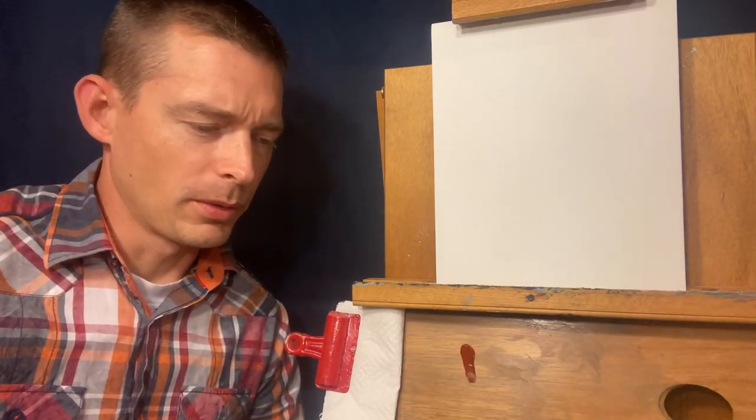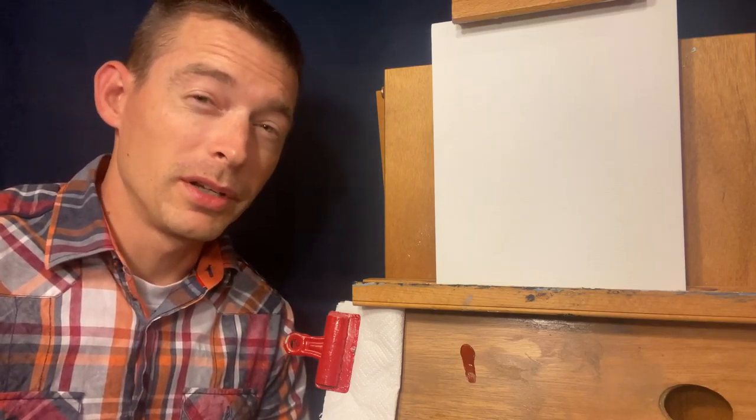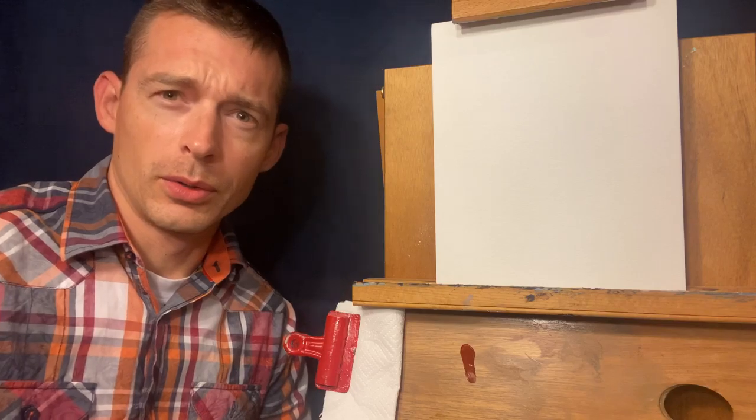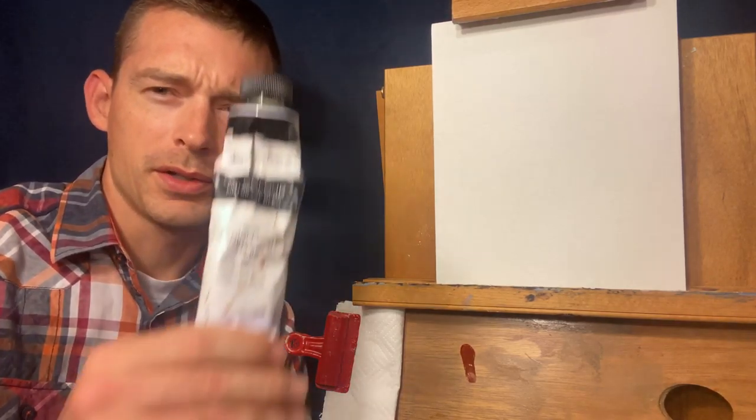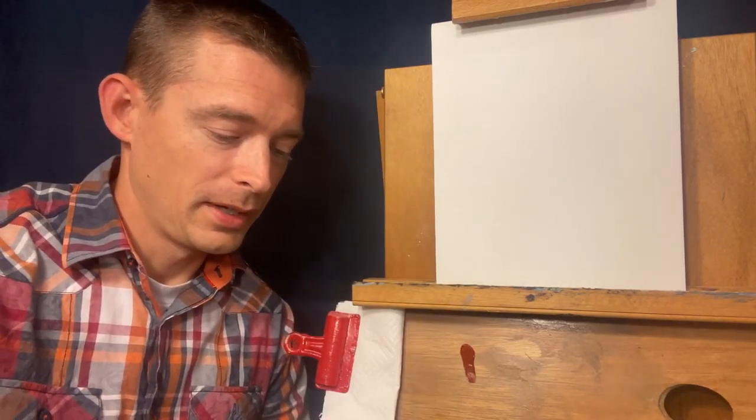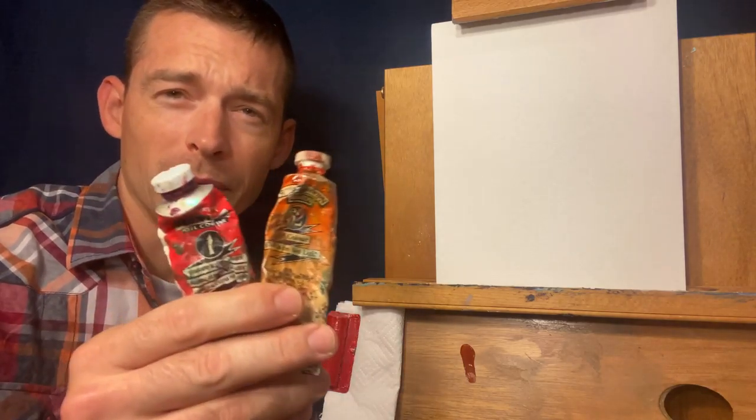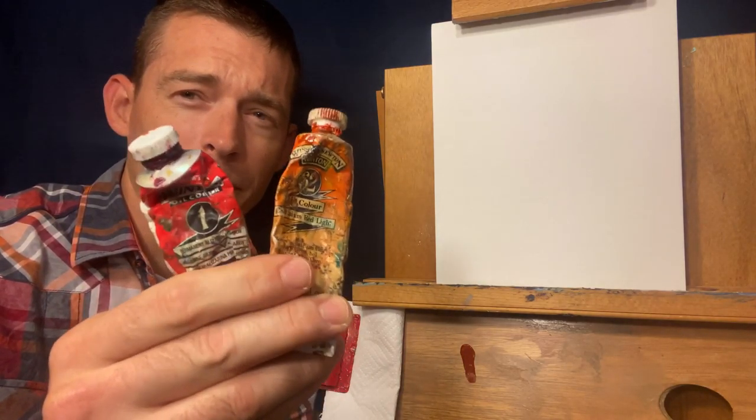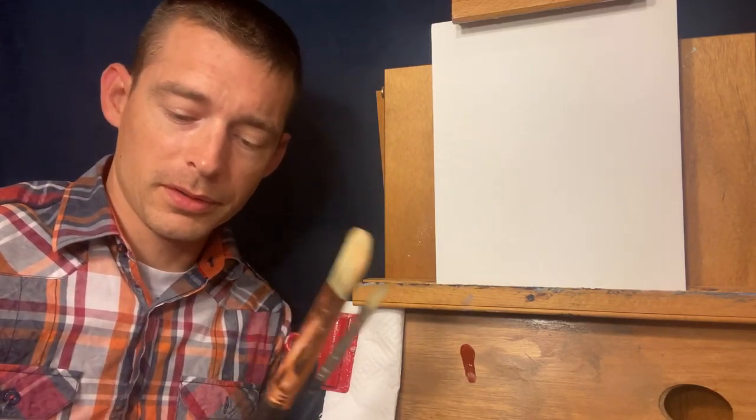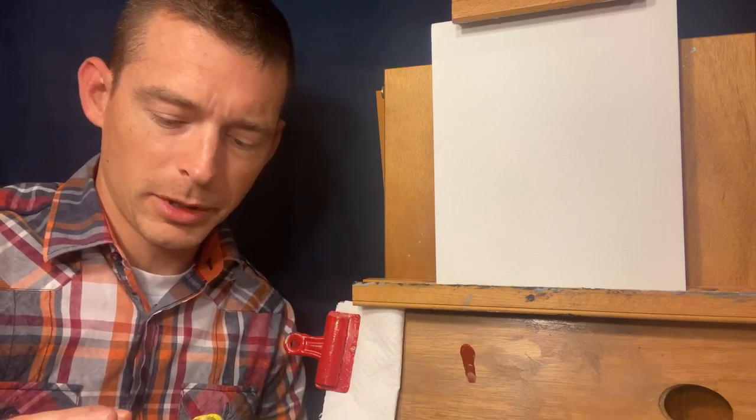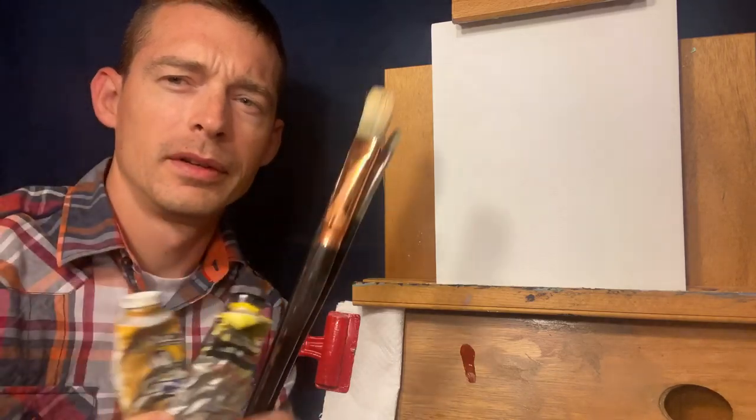The first thing we want to do is get our palette ready. Because of lack of time, I'm just going to go over with you some of the different colors I use. Here's titanium white. I use a lot of this. I use a couple different reds: Alizarin Crimson and a Cadmium Red Light. Be careful with the cadmium red right here. It's got cadmium in it.